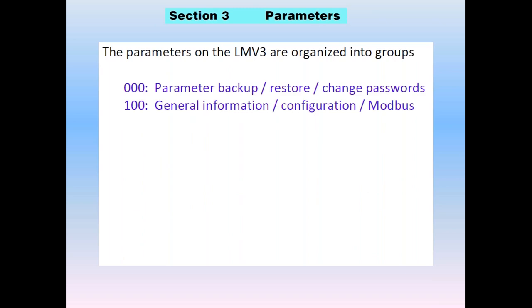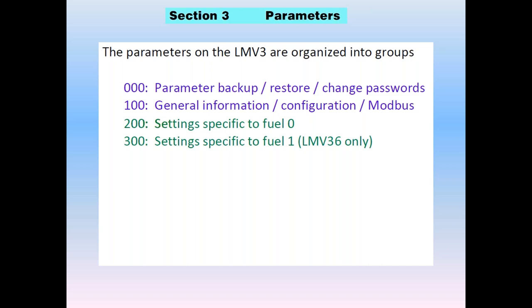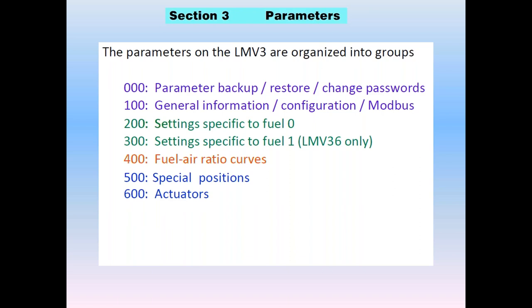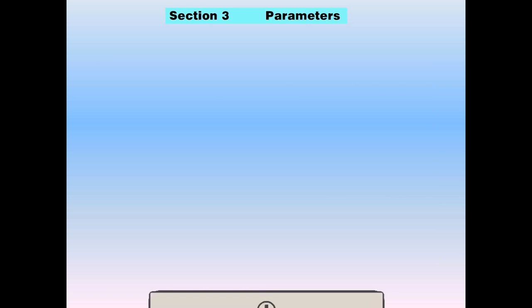The parameters are further organized into groups. The 0s and 100s cover backup, restore, Modbus, general information, and serial numbers. The 200s and 300s are setups specific to fuels — the 200s are fuel zero (gas or oil), and the 300s are for fuel one, used on the LMV36 dual fuel. Parameter 400 has one parameter: your fuel error ratio curve. The 500s and 600s are dedicated to actuators, special positions, direction of rotation, and ramp times. 700 is strictly fault history — 21 faults. And 900 is operational data like flame strength and load controller. Breaking it into groups categorizes the parameters so you can navigate more easily.